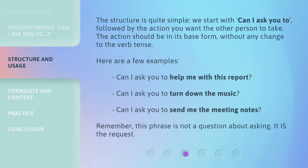The structure is quite simple. We start with 'Can I ask you to?' followed by the action you want the other person to take. The action should be in its base form, without any change to the verb tense. Here are a few examples: 'Can I ask you to help me with this report?' 'Can I ask you to turn down the music?' 'Can I ask you to send me the meeting notes?' Remember, this phrase is not a question about asking — it is the request.